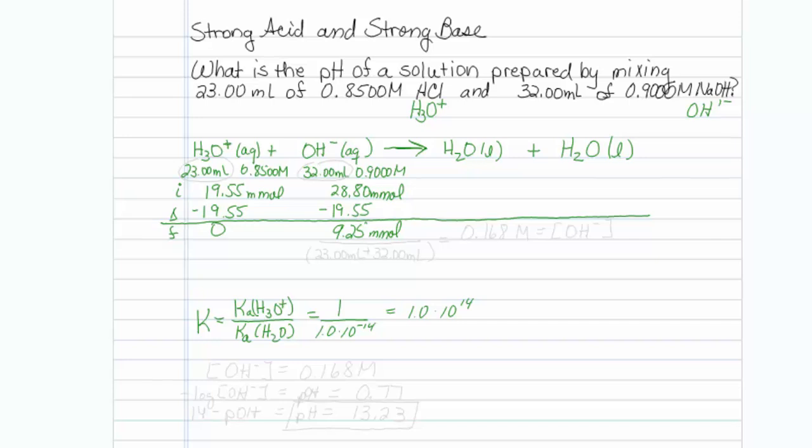So my 9.25 millimoles is in how much solution? It's in 23 mL of solution from the HCl, and 32 mL of solution that came in with the hydroxide.